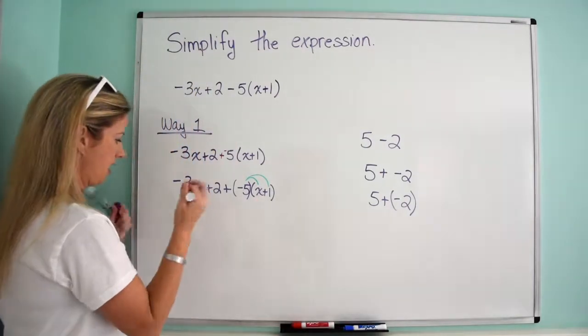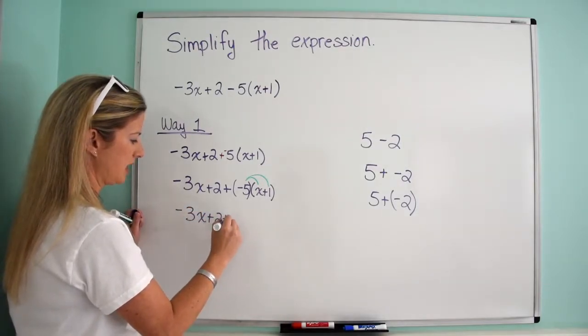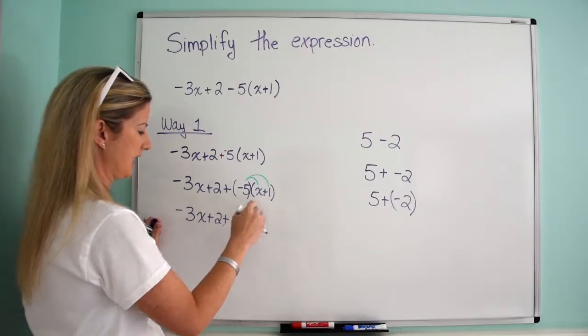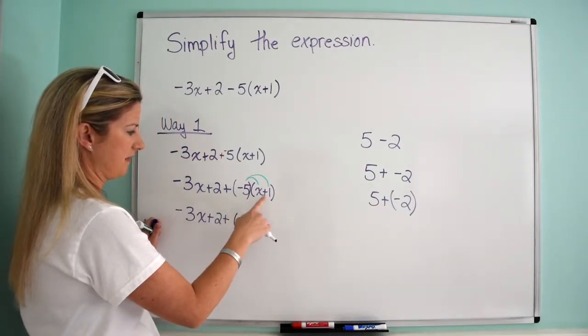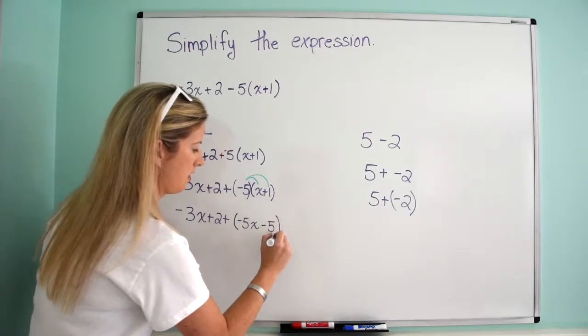So now we have negative 3x plus 2 plus, and then negative 5 times x is negative 5x. And then negative 5 times positive 1 is negative 5. Awesome.